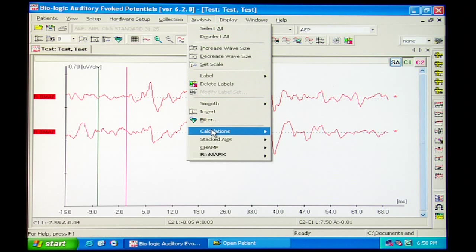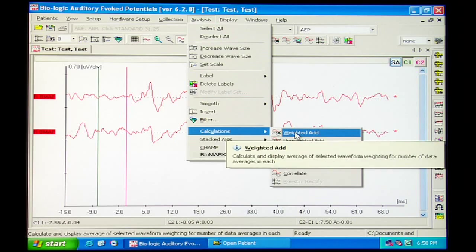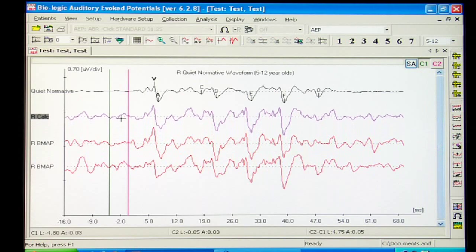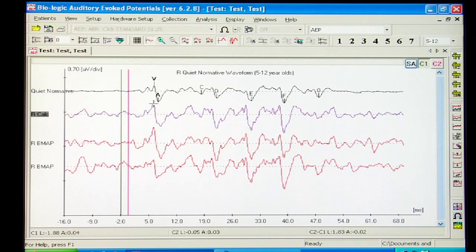The first step is to average together the two trials. The next step is to mark two peaks on this new, final Biomark waveform.